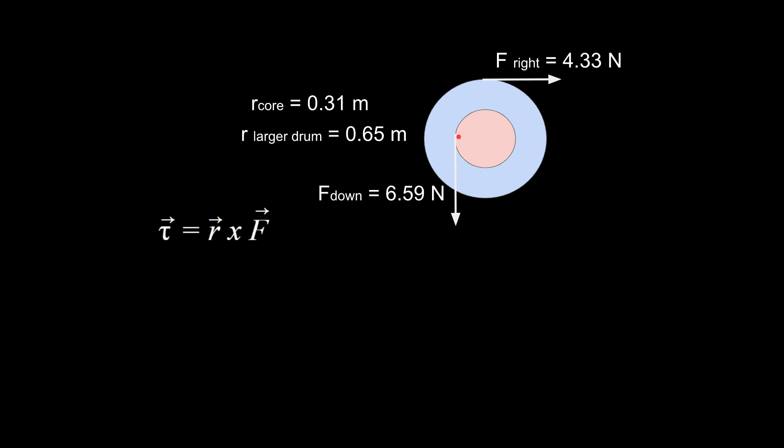These happen to be at right angles to each other. In other words, the radius here is at a right angle to this force. So they are already in the format that we need to just simply multiply them together. So that issue we're not going to worry about. I have dealt with that issue on the previous screencast.